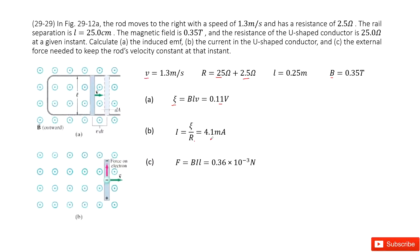The next one asks you for the external force needed to keep the rod's velocity constant. This external force must equal the force by this magnetic field on the current, because this velocity is constant. So this is force balance. This force due to the magnetic field is F = BIℓ. So we input the given quantities and get the answer. Thank you.